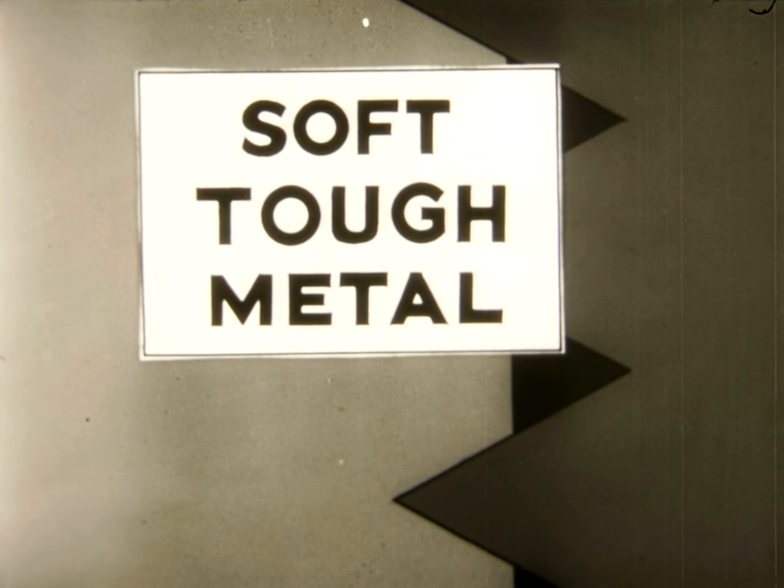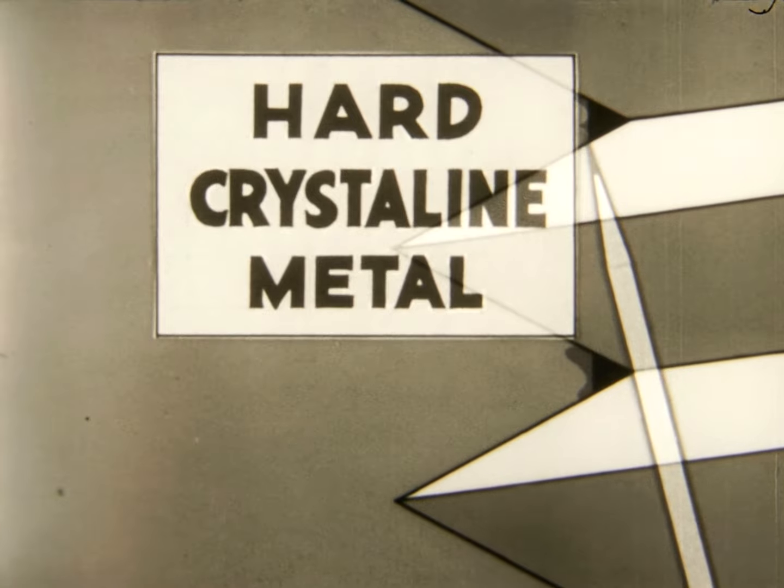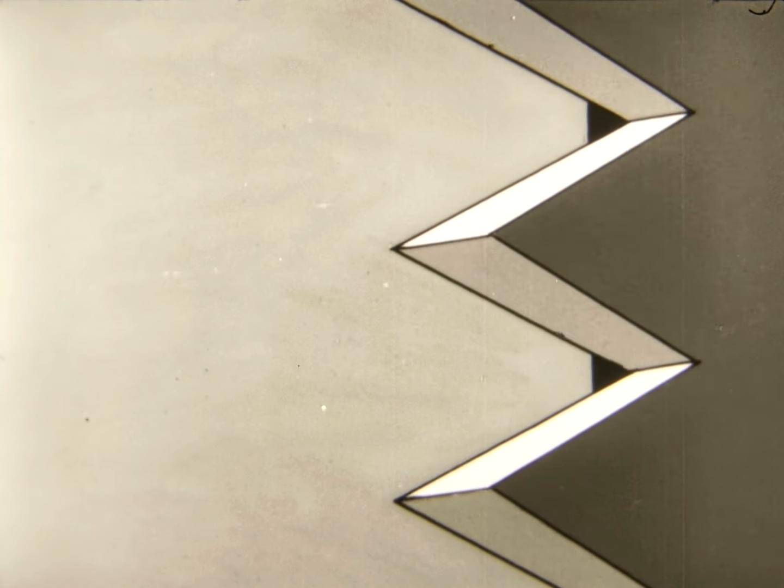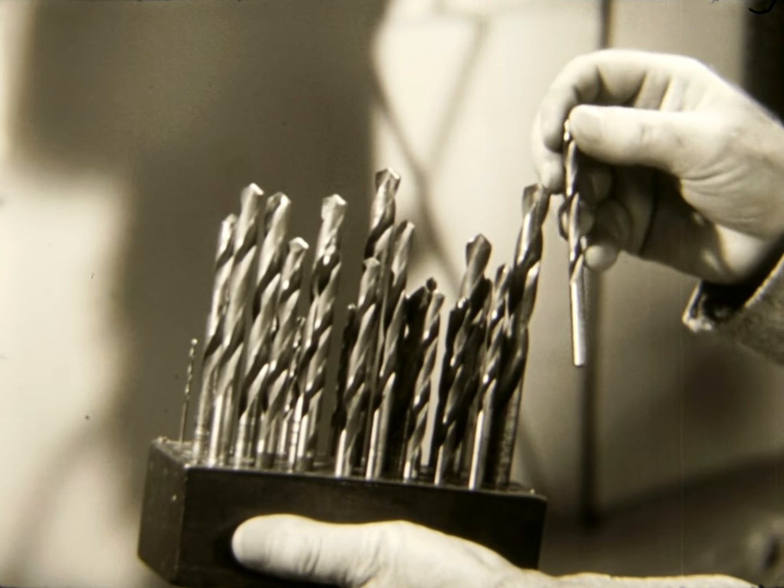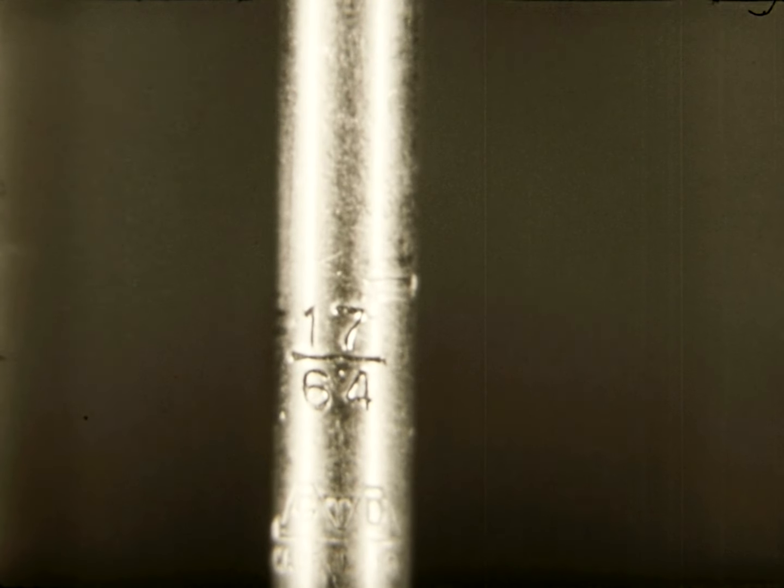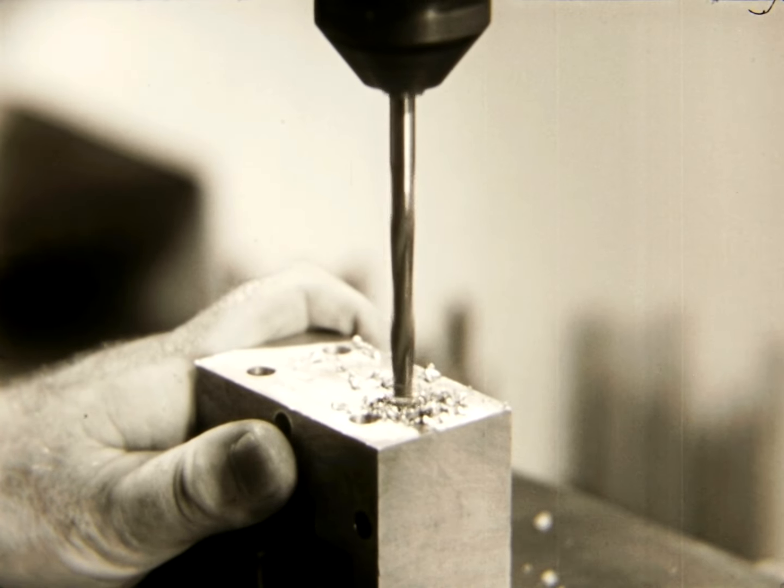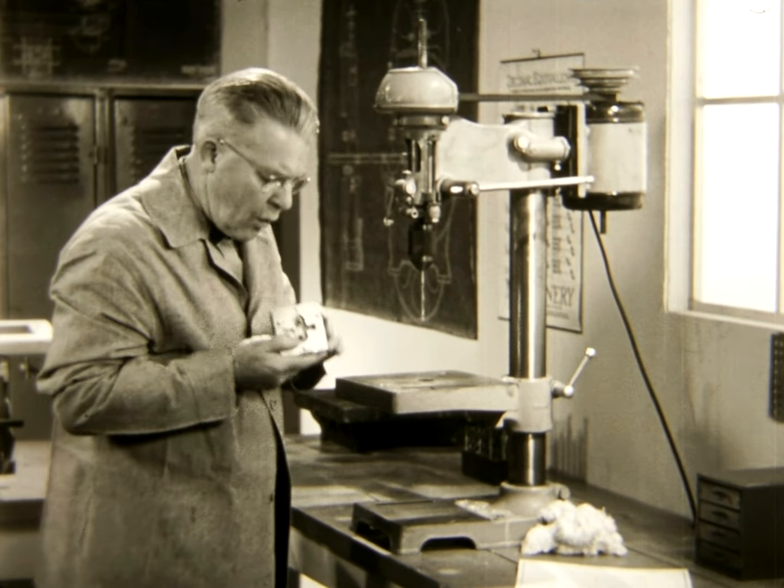When tapping holes in soft metals, a tap drill one size larger than the size given is selected. These metals draw and flow, making the hole smaller. The 17/64 drill called for by the blueprint is selected. The hole is drilled, and all chips carefully removed from the hole.